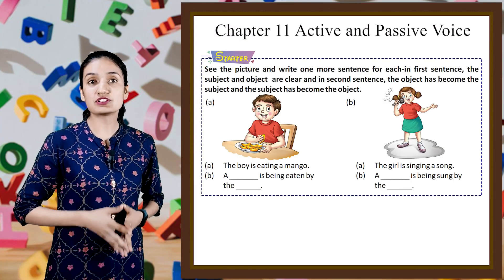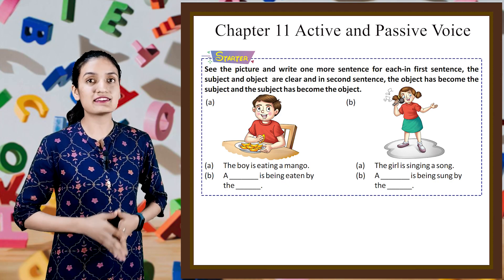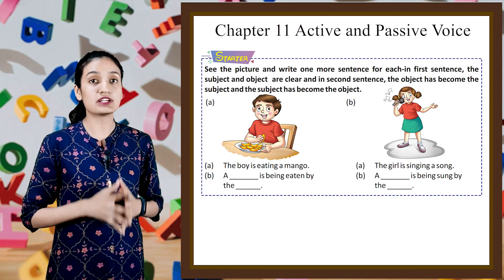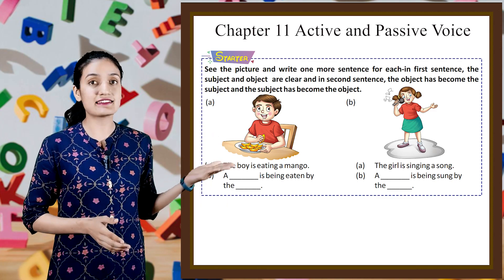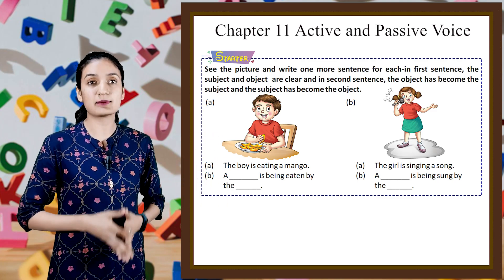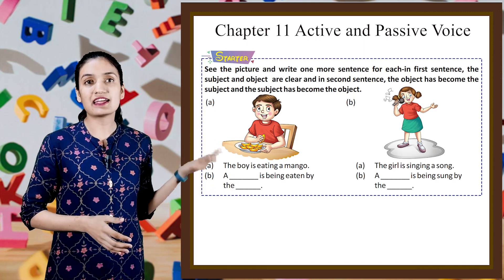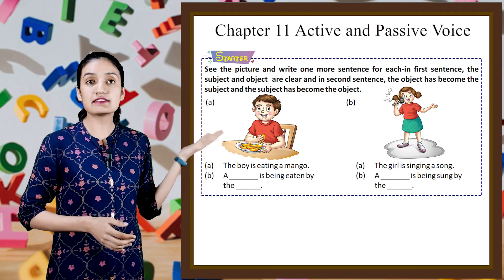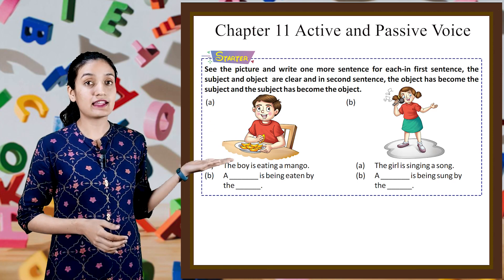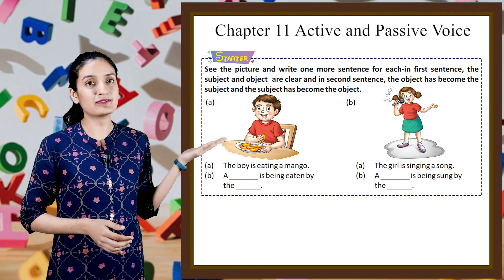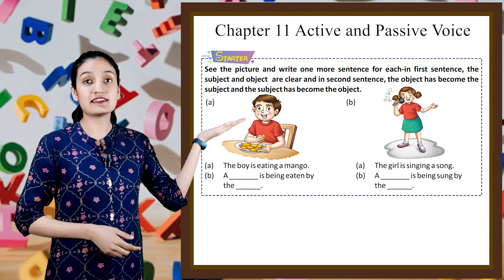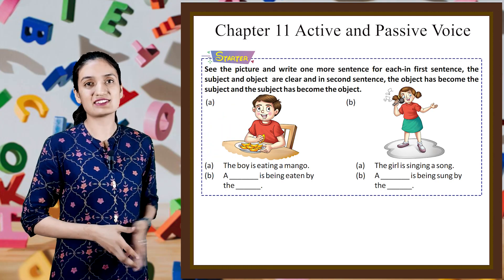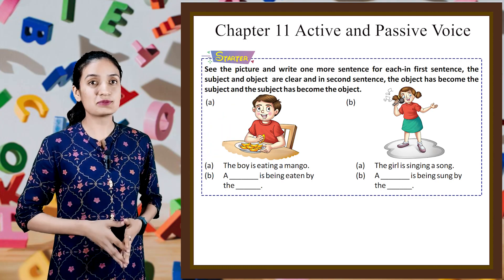See the picture and write one more sentence for each. In the first sentence, the subject and object are clear, and in the second sentence, the object has become the subject and the subject has become the object. The boy is eating mango — the dash is being eaten by the dash. The girl is singing a song — the dash is being sung by the dash. So do it by yourself.